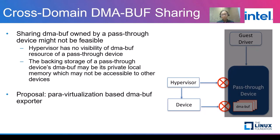But sharing DMA-buf owned by a pass-through device is challenging. First, the hypervisor has no visibility of a pass-through device's DMA-buf resource. Another challenge is that a DMA-buf might be allocated in a pass-through device's private local memory, which may not be accessible to other devices. Due to lacking virtualization knowledge, a pass-through device may not be able to share its DMA-buf.